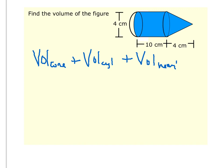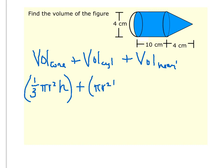Volume of a cone — think back to section 13.2 — is one-third times the area of the base, which is πr squared, times the height of the cone. Plus the volume of a cylinder from 13.1, which is the area of the base, πr squared, times the height of the cylinder. Plus the volume of a hemisphere — remember the volume of a sphere is four-thirds πr cubed, so for a hemisphere we do half of that: two-thirds πr cubed.